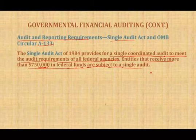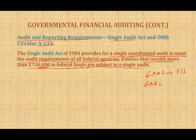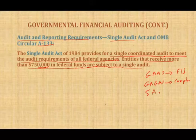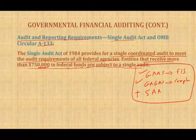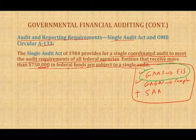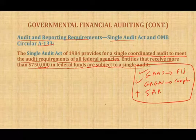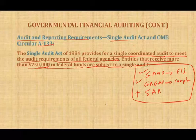So what is the Single Audit? A private company would only conduct a GAS audit to have its financial statements audited. A government agency that doesn't receive federal funding would do GAS and GAGAS — financial statement audit plus compliance. A government agency that receives federal funding must do all three levels: GAS, GAGAS, and the SAA audit. This is where the Single Audit Act comes in.